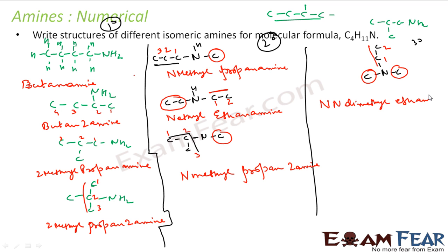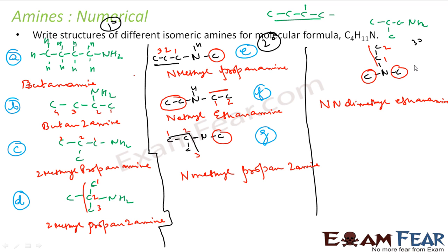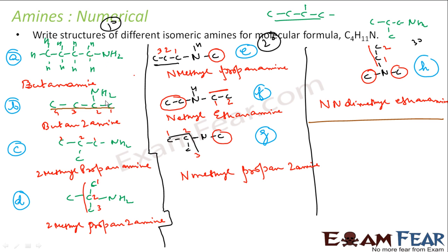Let me label all the structures a through h. The question was to draw the isomeric structures for C4H11N and identify the relationships between them. Looking at a and b: the chain is the same, only the position of the NH2 group changes — from carbon one to carbon two — so a and b are position isomers.